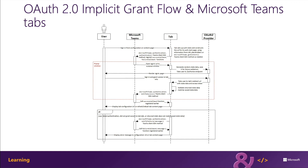This UML sequence shown here on the slide documents the entire process. It starts with the user interacting with the content on the tab configuration or the content page — typically they use a button to start the sign-in process. The tab then builds the URL for its authentication start page, optionally using information from URL placeholders or by calling Microsoft Teams.getContext.